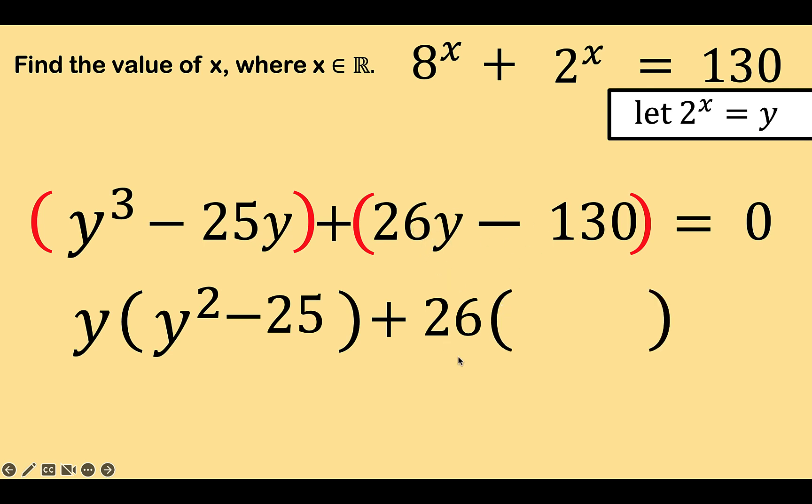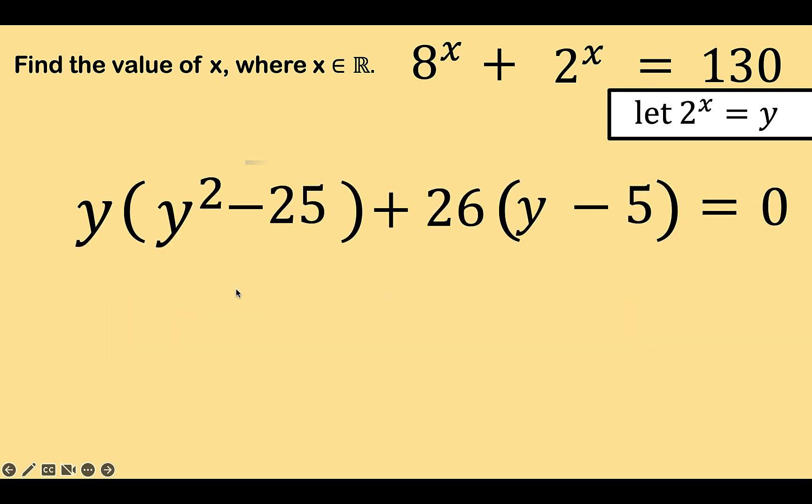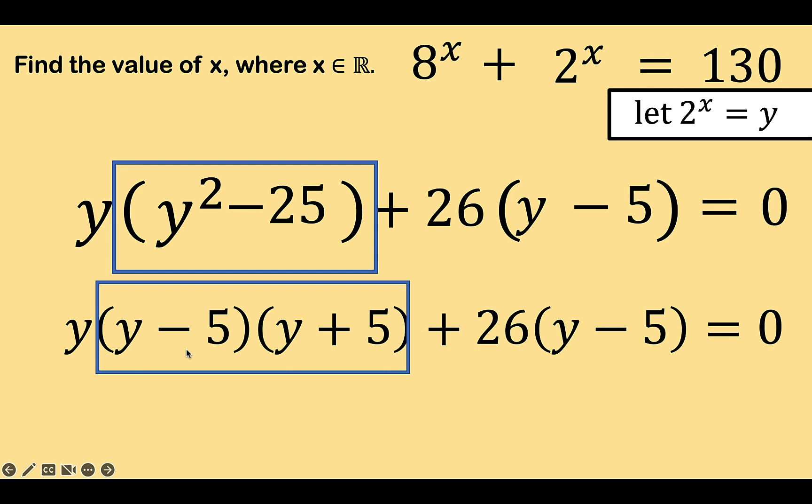So, 26y divided by 26 is 1y or simply y. Negative 130 divided by 26 is negative 5. Copy the right side equals 0. Notice that we have here a difference of two squared. So, we can now factor this out as two factors. y minus 5 times y plus 5. All the rest are copied.